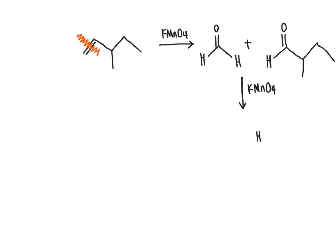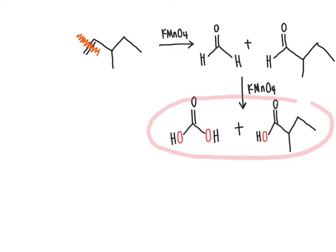The aldehyde on the right gets converted to a carboxylic acid — the oxygen shown in red is being provided by the potassium permanganate oxidizing agent. As for formaldehyde, since it has two C-H bonds on the carbonyl carbon, both sides can be oxidized, ultimately producing CO2 (carbonic acid equivalent). The final major organic product of this reaction is the carboxylic acid from the non-terminal carbon.